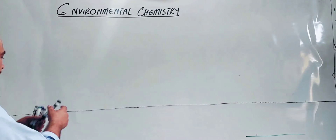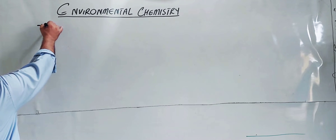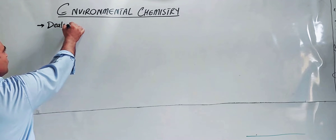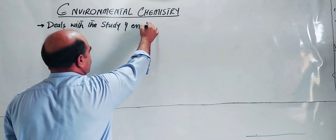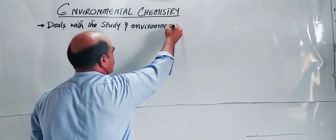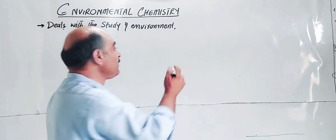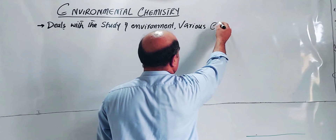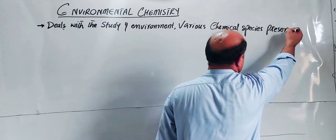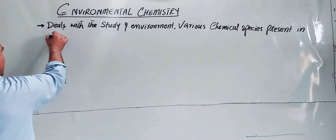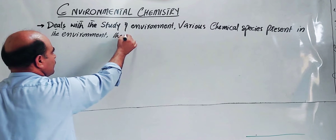Today's topic is Environmental Chemistry. Let me give you the basic background. First: what is Environmental Chemistry? Environmental Chemistry is the branch of chemistry which deals with the study of the environment — the surrounding atmosphere. Environmental Chemistry deals with the study of various chemical species present in the environment.